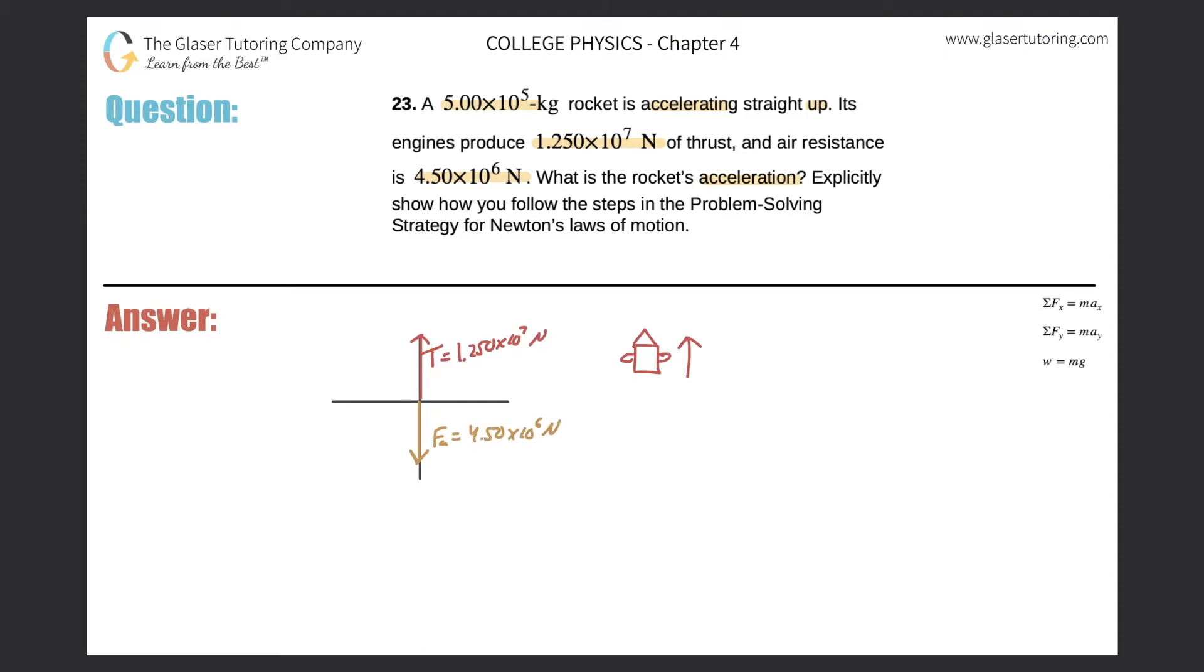So let's call this the force of air resistance, 4.50 times 10 to the 6 newtons. Now it almost seems like we have everything we need, but there's one thing that's missing. This is what you really want to remember when you're doing accelerations in the y direction: please do not forget the weight of the object itself. If you forget about that, you're going to be wrong. The thrust that the engines produce not only has to overcome any air resistance, it also has to overcome its own weight.